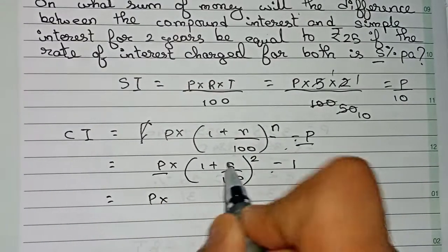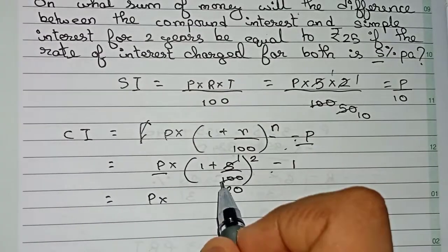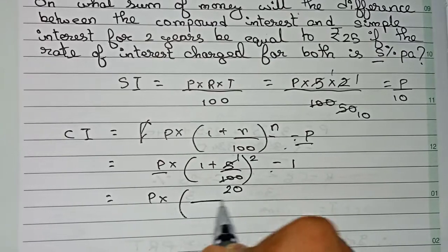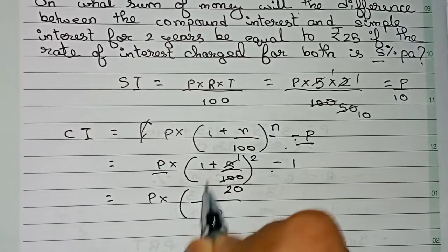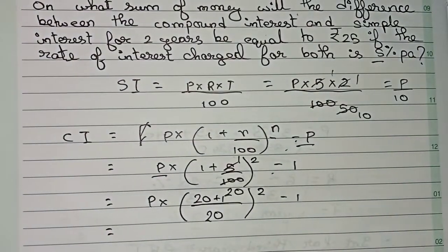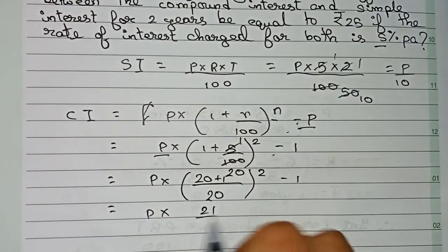So now I write P into 1 by 20. So 1 by 20, it means you take 20 as the common: 20 into (1 by 20 plus 1) to the power 2 minus 1. So again principal into, so 20 plus 1 is 21 by 20.